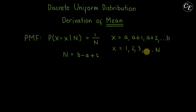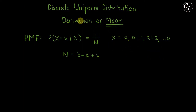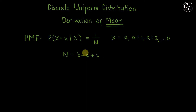So now we can remove that. In this derivation, the value of the random variable is from a to b. Now for n, it has a value of b minus a plus 1, where b and a are as shown.